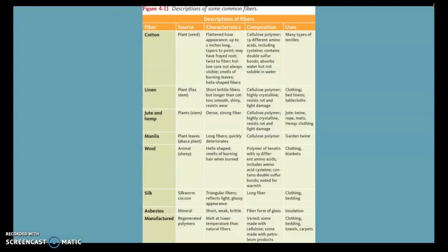Here we have a table that compares these different types of fibers. It gives you a description of each and describes their different characteristics. The first four—cotton, linen, jute and hemp, and manila—are all fibers made from plants. Cotton is made from the seed, linen, jute, and hemp are all made from stems of different types of plants, and manila is the fiber that comes from plant leaves, from the abaca plant.